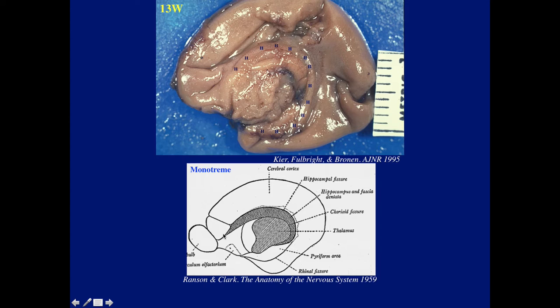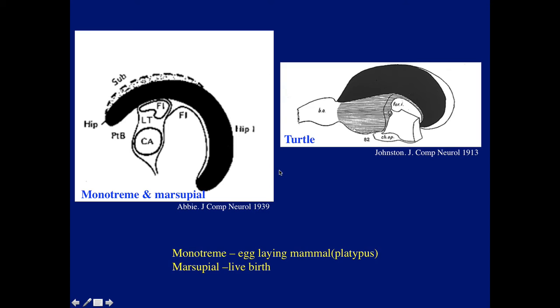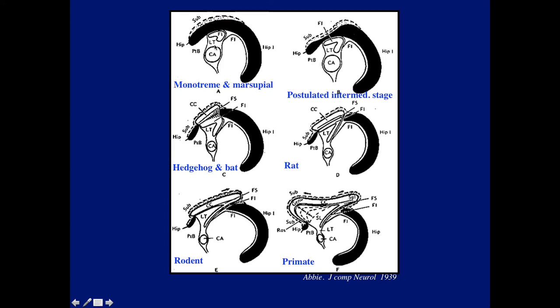If you look at a diagram of a platypus, a primitive mammal, the hippocampus is again surrounding — very similar to what we see in the human early on. The hippocampus in early mammals like the egg-laying platypus or marsupials is quite large. Even the turtle — look at the size of the hippocampus occupying most of the cerebrum. As the brain evolves, as the corpus callosum develops — it actually develops within the hippocampus — the hippocampus gradually becomes smaller in the hemisphere and just remains in the temporal lobe, while the corpus callosum takes over the rest of the brain because of neocortical development.